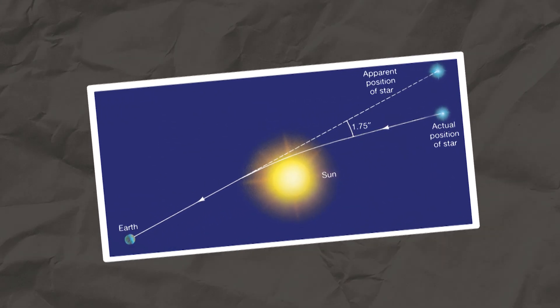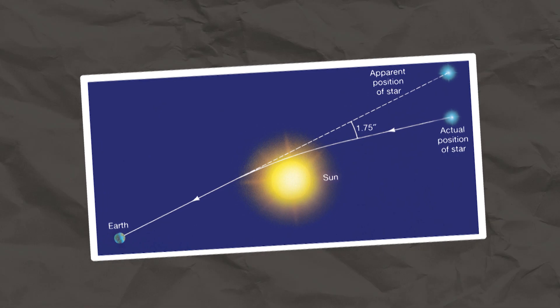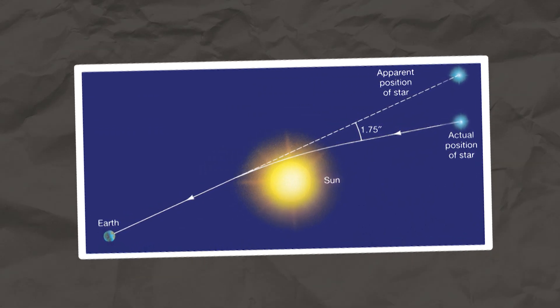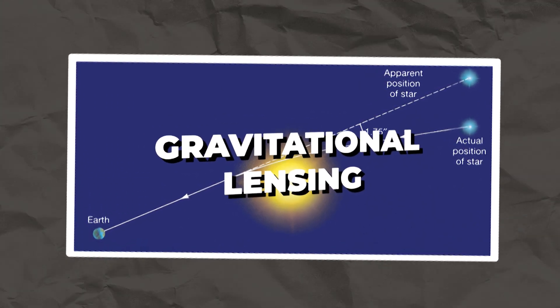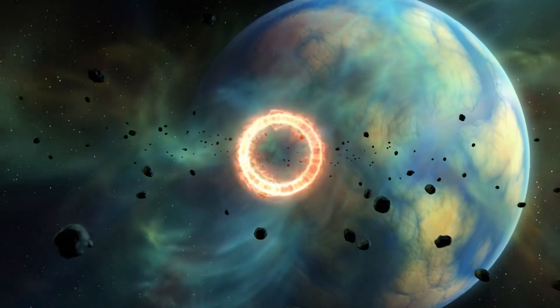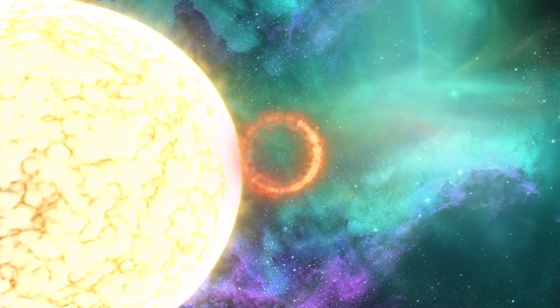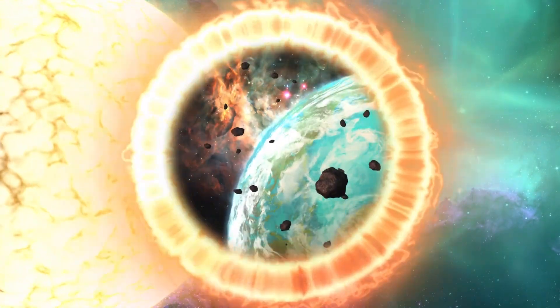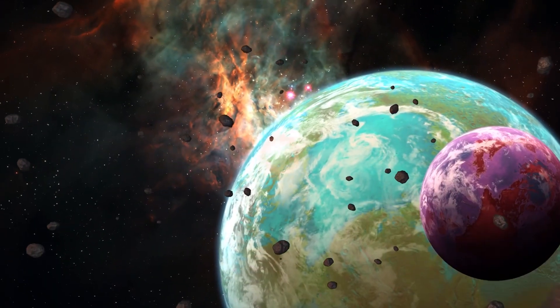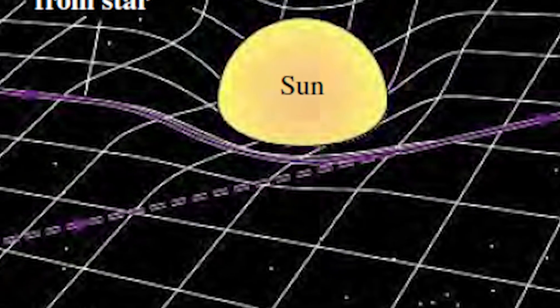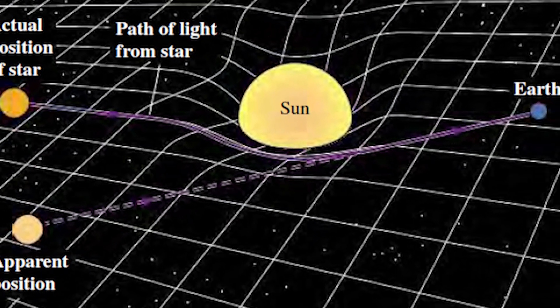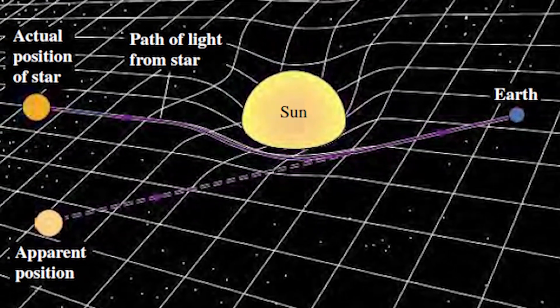One of the most striking predictions of general relativity is the bending of light in a gravitational field, known as gravitational lensing. This phenomenon, which has been confirmed by observations, allows us to see light from distant stars curving around massive objects like galaxies. It is as if the mass of the galaxy acts as a lens, bending the path of light and magnifying distant cosmic objects.